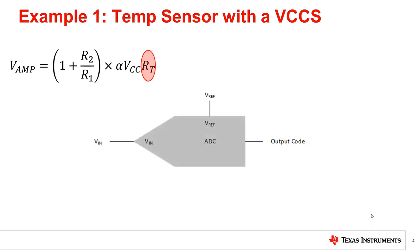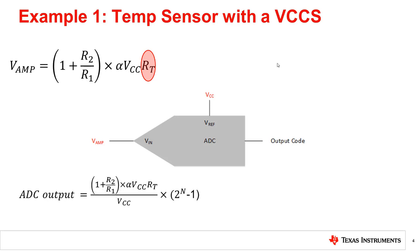To do so, we use the ADC as a signal conditioning circuit. For an ADC, the relationship between input and output is specified as shown. By connecting the VCC as the reference voltage and the output of the op amp circuit as the input of the ADC, the relationship between input and output may be simplified as shown. Our system is now measuring the ratio of V_amp and VCC, which is equivalent to the direct measurement of RT. Further simplification shows that the external variation brought by VCC is no longer a part of the equation, thus establishing a ratiometric measurement.